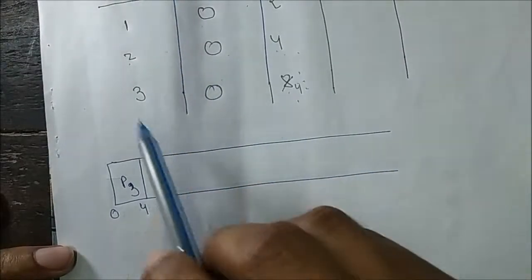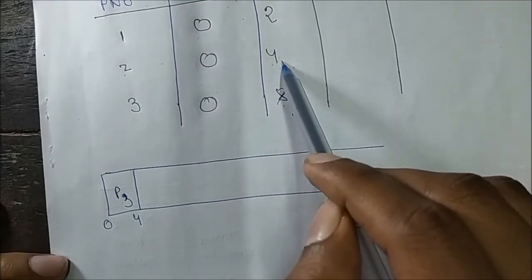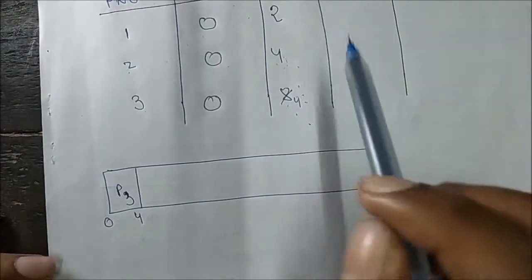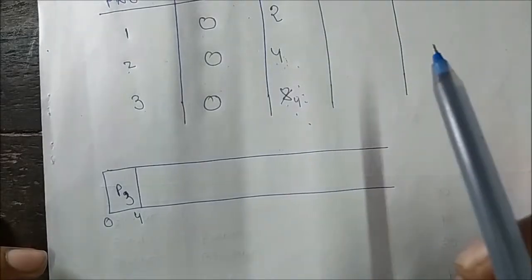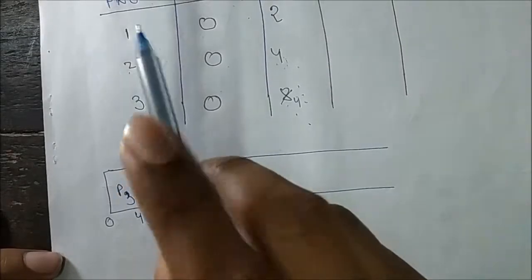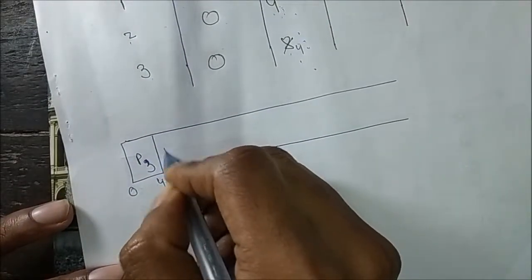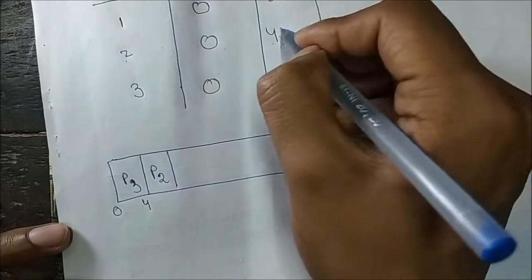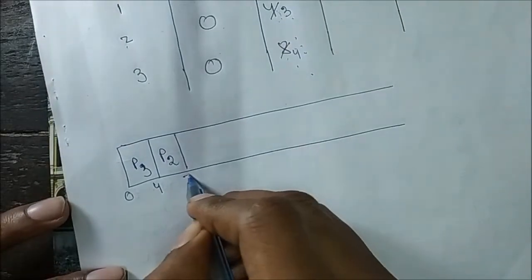At time 4, P2 and P3 have the same remaining burst time of 4. When two processes have the same burst time, the process with the lower process ID executes first. Since P2 has a lower ID than P3, P2 comes next and runs for 1 unit, making its remaining burst time 3.